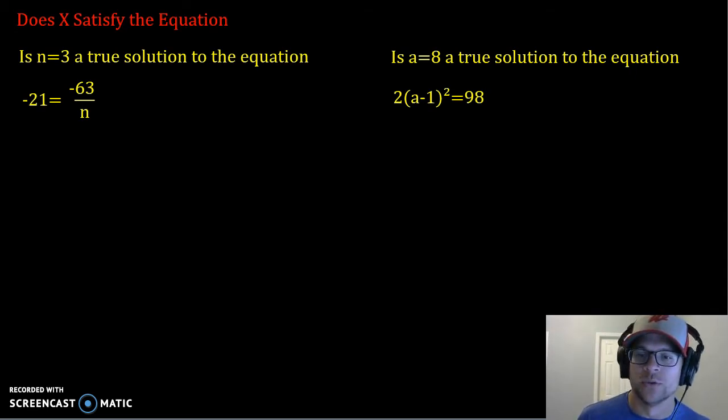For our first one, is n equals 3 a true solution to the equation, negative 21 equals negative 63 over n? So the first thing that we're going to do is we're going to substitute, instead of n, we're going to say that 3 is now going to be in our n position.